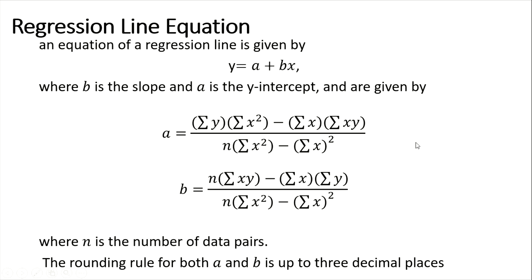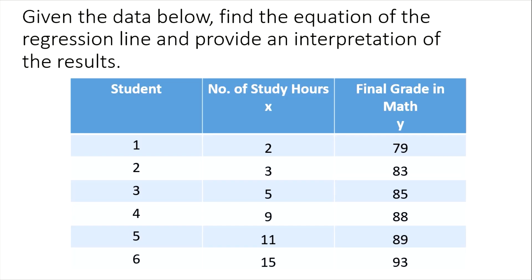The formulas for slope b and y-intercept a are given, where n is the number of data pairs. The rounding rule for both a and b is up to three decimal places. Now let's work through our first example: given the data below, find the equation of the regression line and provide an interpretation of the result.